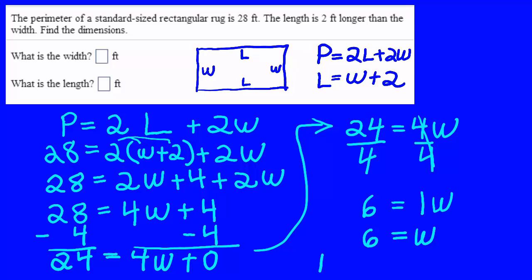I now know that the width is 6 feet. The length is 2 feet longer than the width, so the length is going to be 6 plus 2, which is 8. And I write my answers up there in the answer boxes.